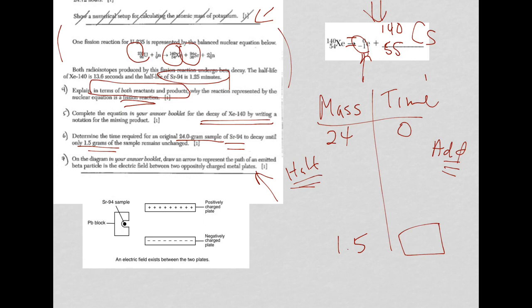After one half-life, 24 goes to 12. Then another half-life, 12 goes to 6. Another half-life, 6 goes to 3. And then finally, 3 goes to 1.5. So what am I doing with time? Well, time, I'm adding. My half-life is 1.25.